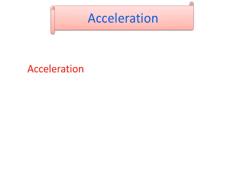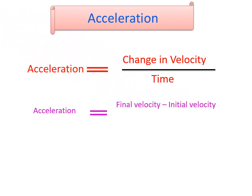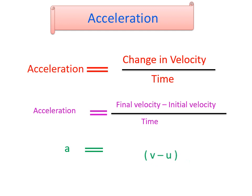The next topic is acceleration. Acceleration is nothing but the rate of change of velocity. The formula of acceleration is: acceleration equals change in velocity divided by time. Change in velocity means final velocity minus initial velocity. So, acceleration A = (V - U) / T. If the velocity of an object changes during a certain period, then it is said to have accelerated motion.